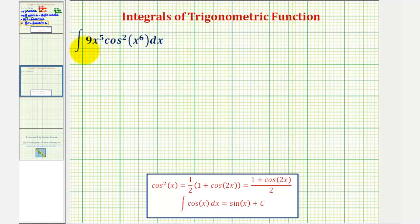We want to find the antiderivative or evaluate the indefinite integral. Let's begin by factoring out the nine and write this as nine times the integral of x to the fifth cosine squared x to the sixth dx.